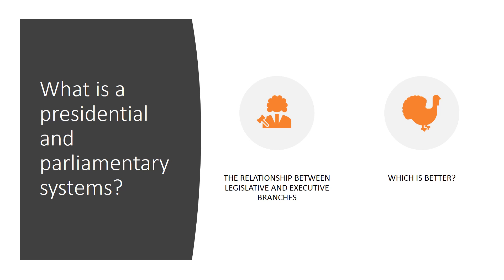The bottom line is that there is no better system. They are different types of organization of the legislative and executive branches, and none is better than the other. For a certain country at a certain point in history, one of them is more convenient and suitable. Countries sometimes shift between systems — like Turkey, which used to be a parliamentary system and through a recent constitutional amendment changed to a presidential system.